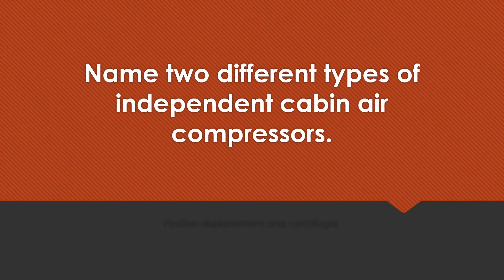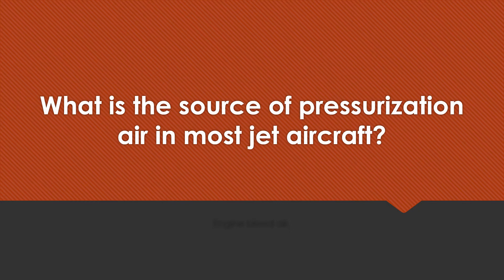Name two different types of independent cabin air compressors. Positive displacement and centrifugal. What is the source of pressurization air in most jet aircraft? Engine bleed air.